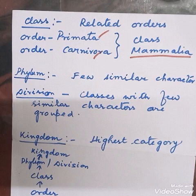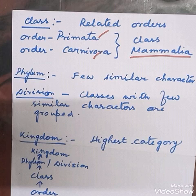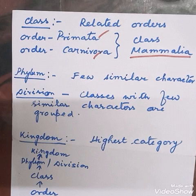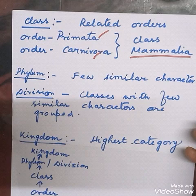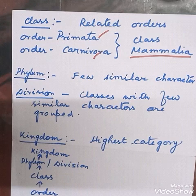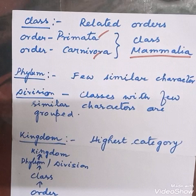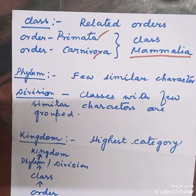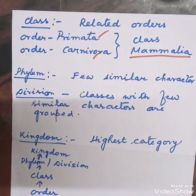Next is phylum — used for animals. Phylum constitutes the next higher category above class for animals, based on common features. Classes with a few similar characteristic features are grouped together to form the phylum. For plants, the equivalent category is division. So after class: animals have phylum, and plants have division.